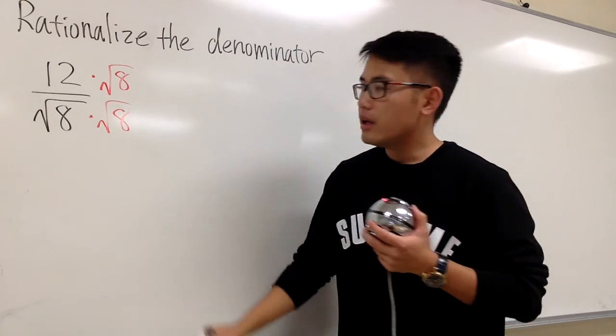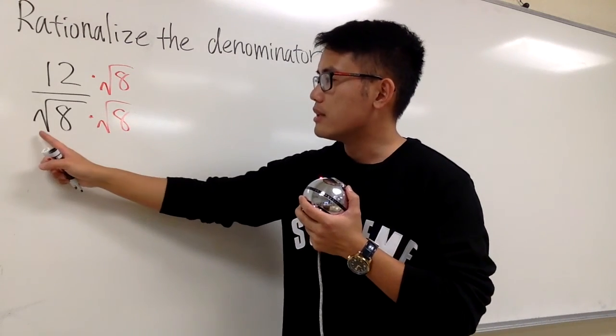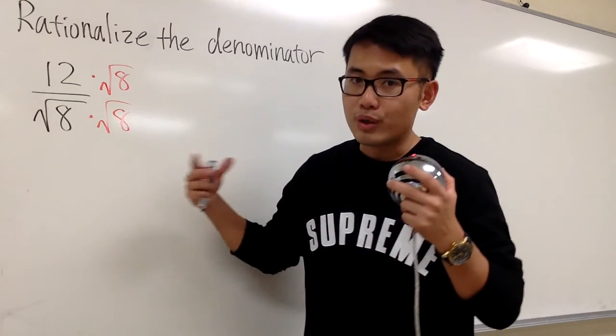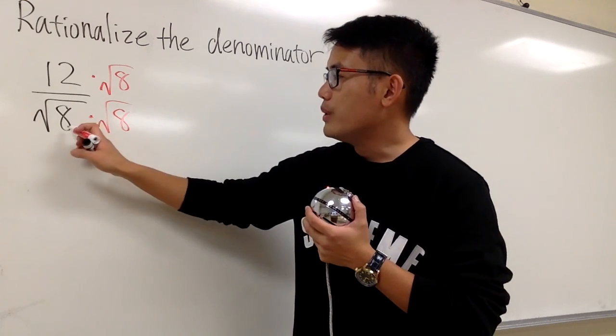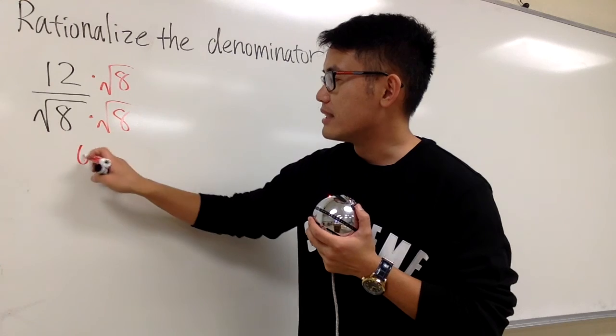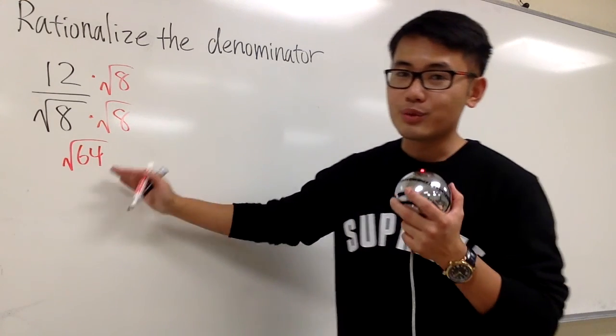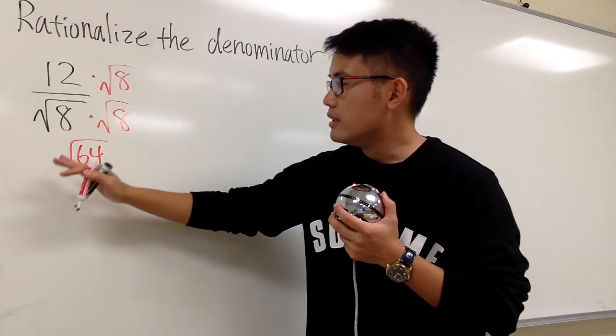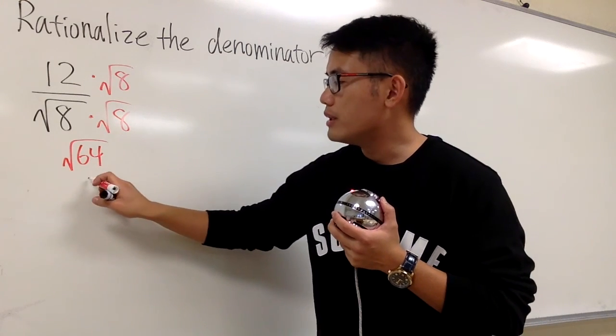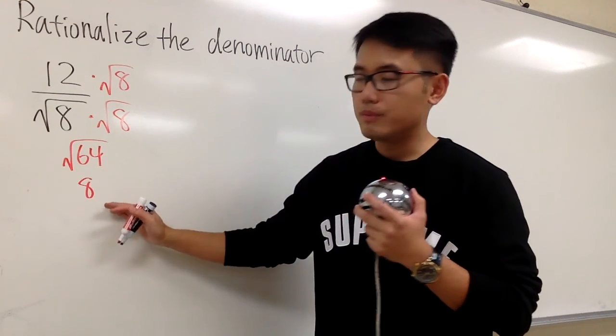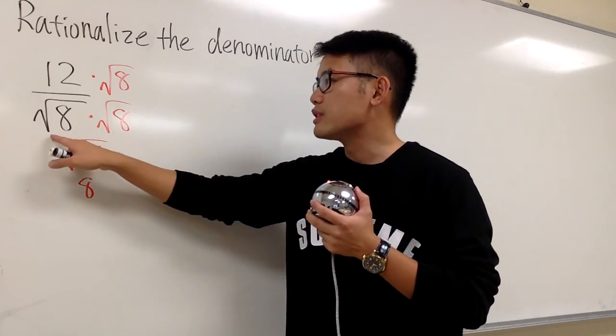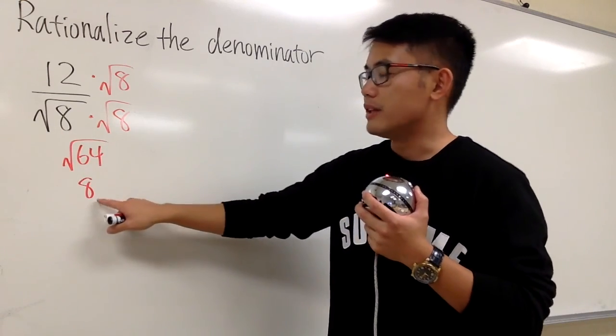And you see, the reason that we can do that is because square root of 8 times square root of 8. Let me work on all the details for you guys. We can just multiply the inside. We have 64, and then this is still the square root. We haven't done the square root yet, right? And square root of 64, we know it's just a nice number 8.